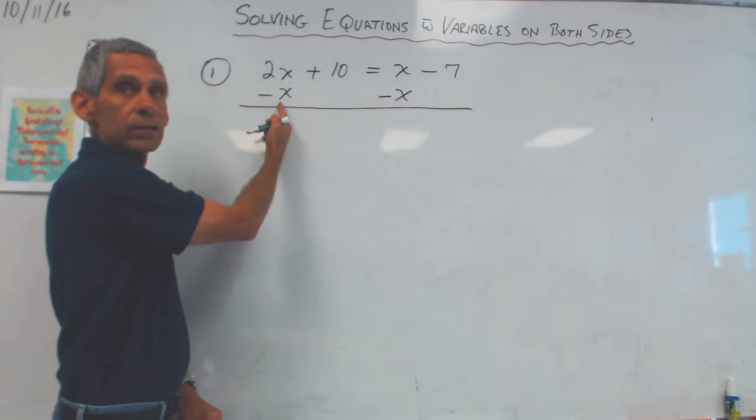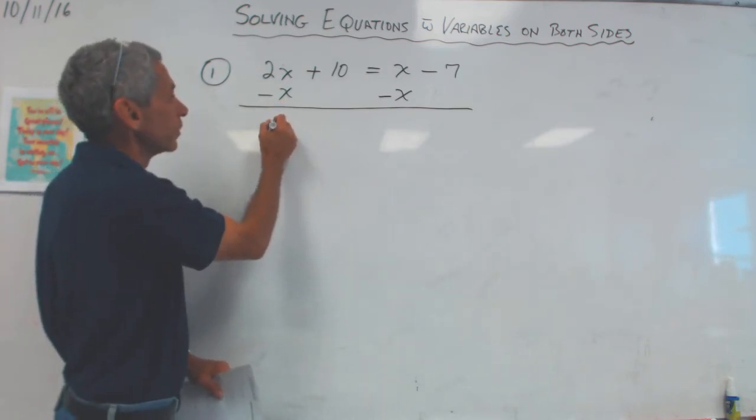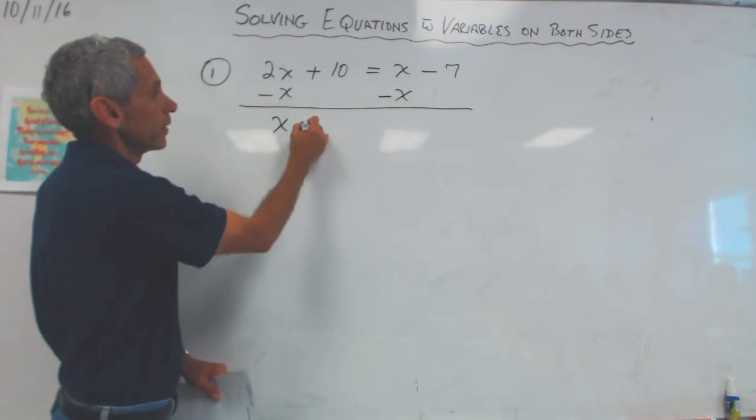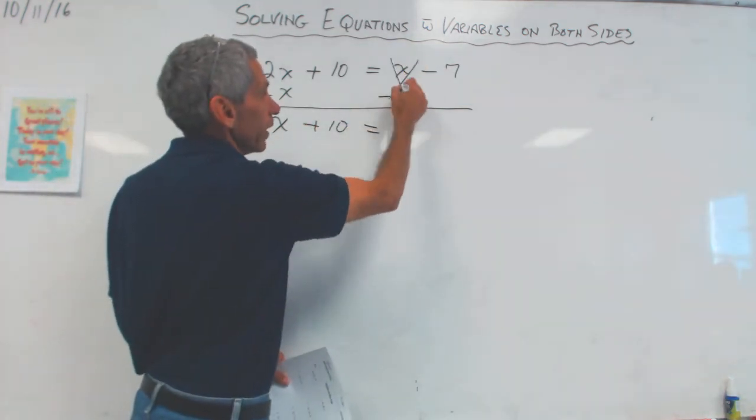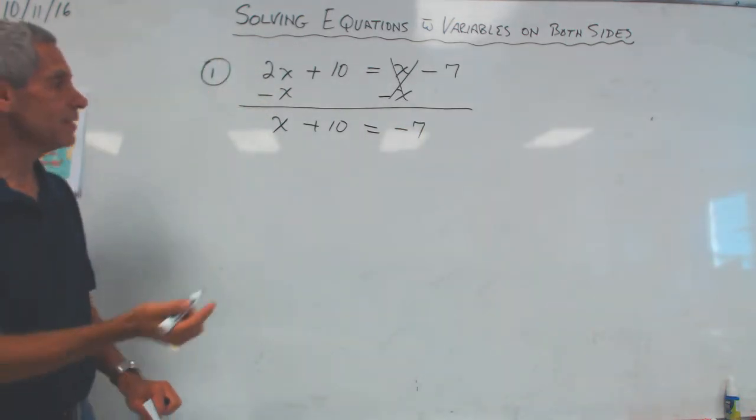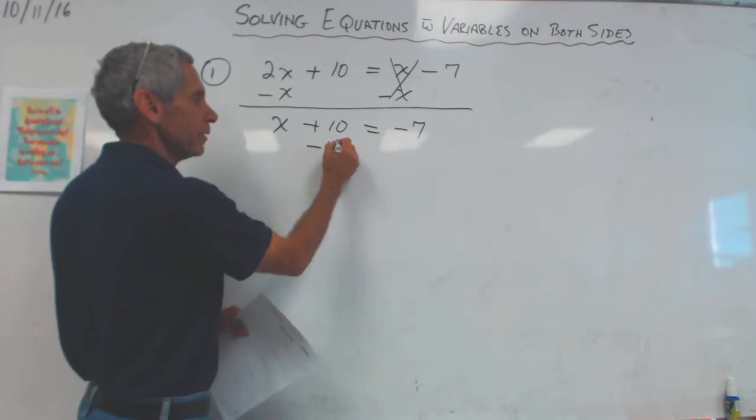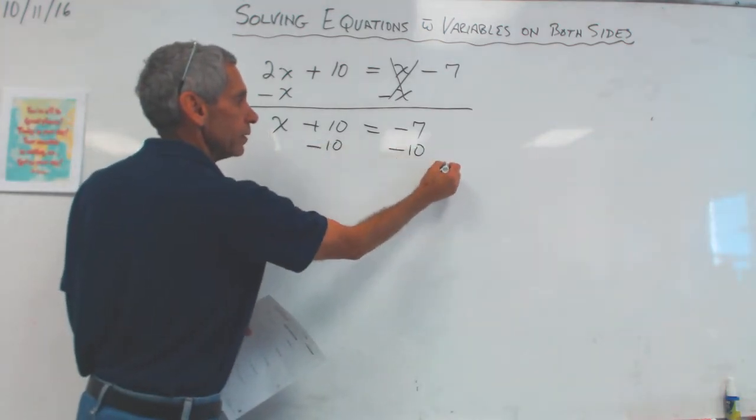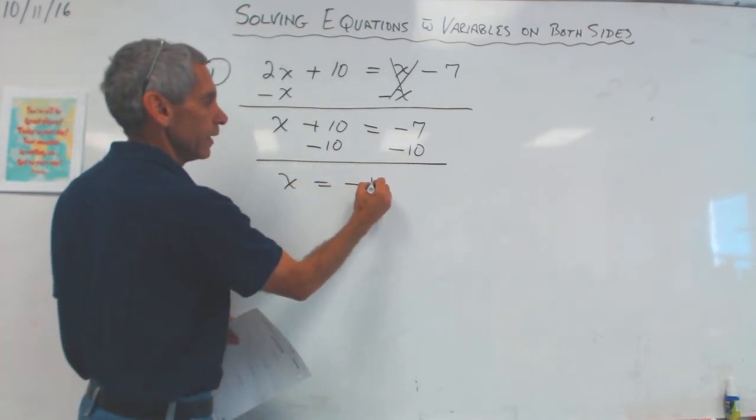Two x's minus an x, or two apples minus one apple is just one apple, or one x, or x. And then I say plus 10 equals, those crossed out, negative 7. Oh my gosh. Now it's easy. It's just a one-step equation now. I subtract 10. Subtract 10. Draw my line. I've got x is equal to negative 17.